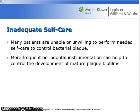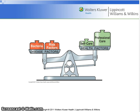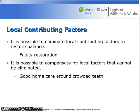Restoring balance. Many patients are unable or unwilling to perform needed self-care to control bacterial plaque. More frequent periodontal instrumentation can help to control the development of mature plaque biofilms. See figures 12.3 to 12.5 on page 213. It is possible to eliminate local contributing factors to restore balance, such as removing a faulty restoration, or to compensate for local factors that cannot be eliminated, such as good home care around crowded teeth.